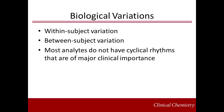There are two types of biological variations: within-subject and between-subject. Within-subject variation is the random fluctuation around a homeostatic point. In individuals, the homeostatic point usually varies. The variation between individuals is called between-subject biological variation. Certain analytes have predictable biological rhythms or cycles; for those analytes, a patient sample must be collected at the appropriate time in the cycle for the clinical purpose. However, most analytes do not have cyclical rhythms that are of major clinical importance.